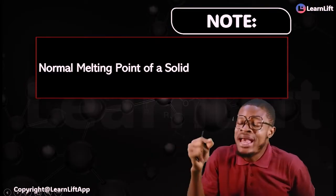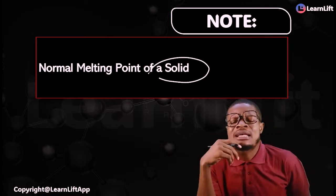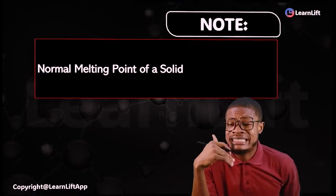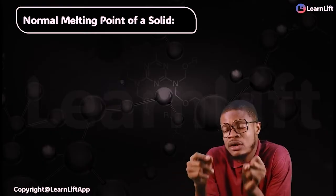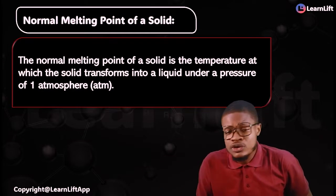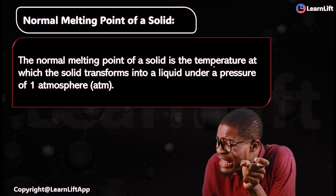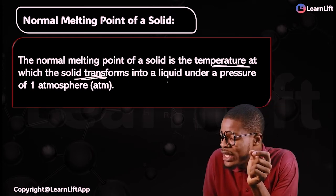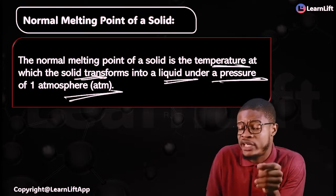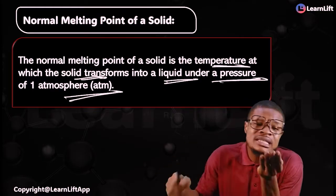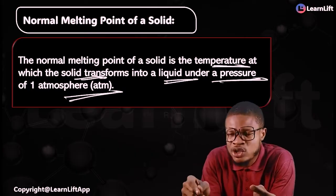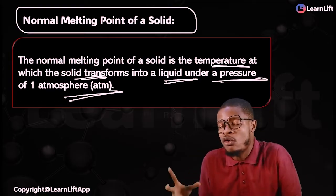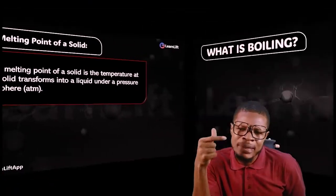There is what we call the normal melting point of a solid — this is one area they don't play with. The normal melting point of a solid is the temperature at which a solid transforms into a liquid under a pressure of one atmosphere (1 atm).